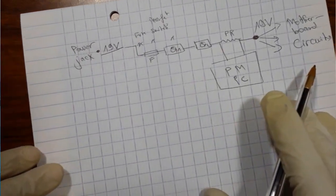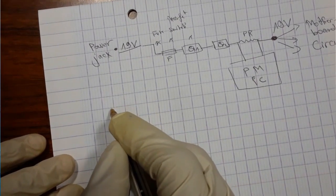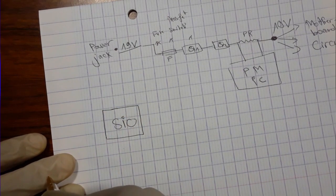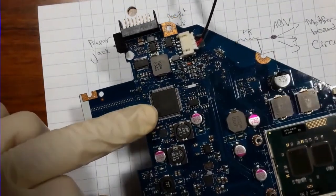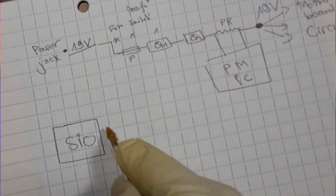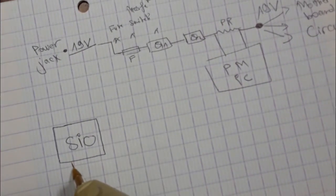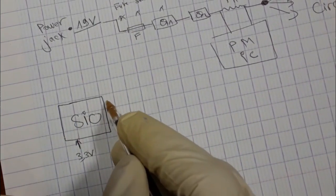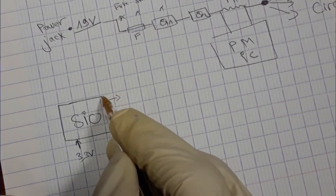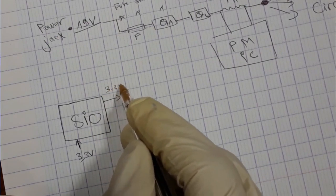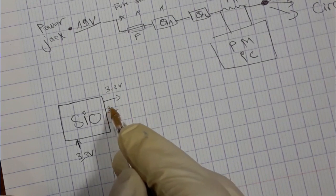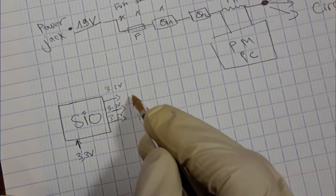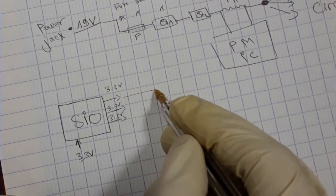For the SIO, the super I/O IC, this SIO is powered with 3.3 volts and also gives 3.3 volt signal to many components.